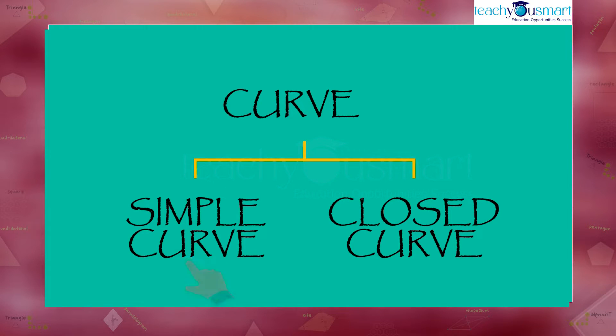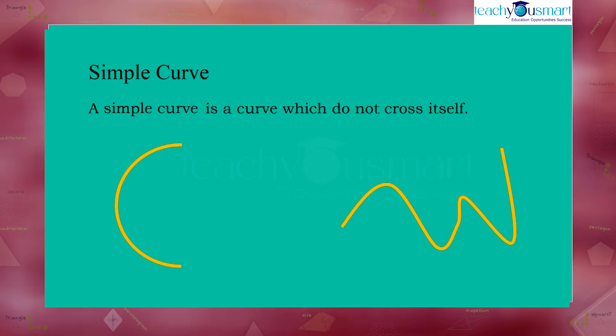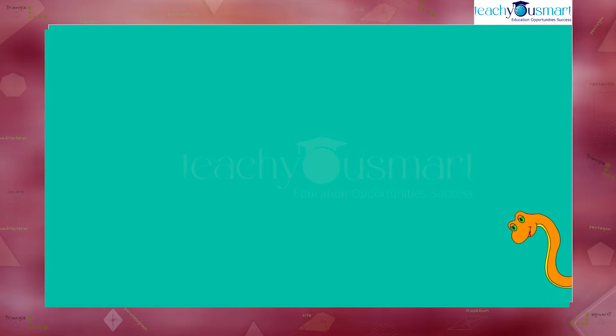A simple curve and a closed curve. What's the difference between these two? A simple curve, as the name suggests, is simple. It can be defined as a curve that does not cross itself. Can you find some examples?